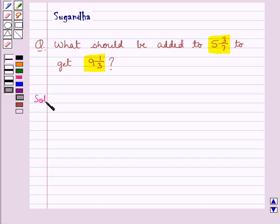Let's move on to the solution now. We have to find out the number which should be added to 5 3 upon 7. Let that number be x so that we get 9 1 upon 3.